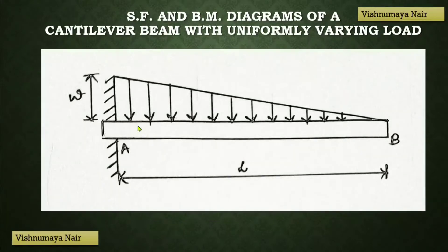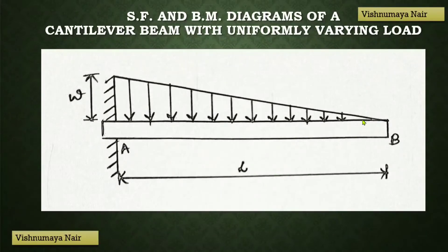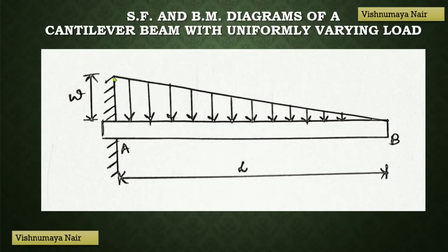We all know what a cantilever beam is. A beam which is fixed at one end and free at the other end is known as a cantilever beam. And here we have a uniformly varying load. A load which is spread over a beam in such a manner that the rate of loading varies from point to point along the length of the beam is known as a uniformly varying load.